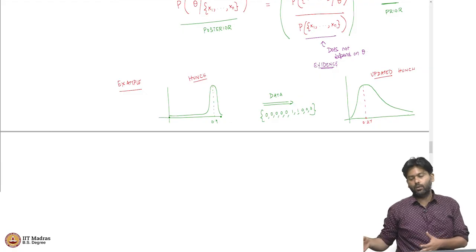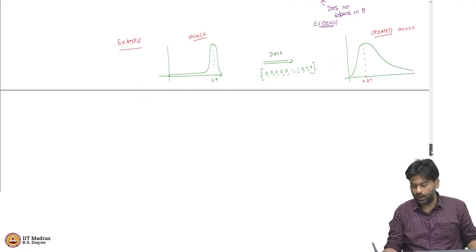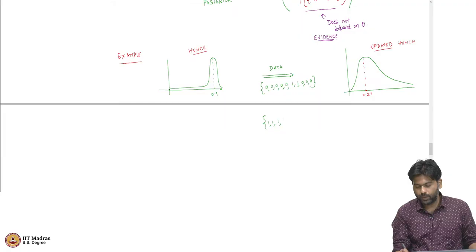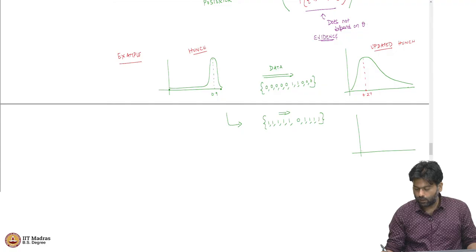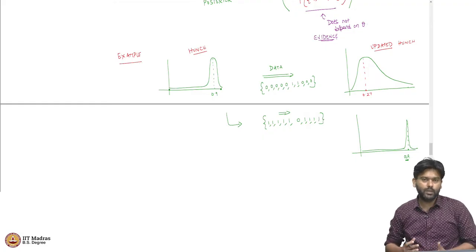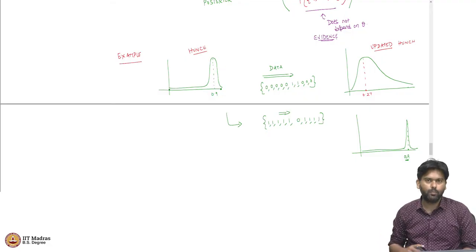If instead I had the flipped version of the data — say, 9 ones and 1 zero — the same prior belief of p near 0.9 would translate into an even sharper peak near 0.9 in the posterior, because the data also corresponds to my hunch. This is the idea of Bayesian modeling.